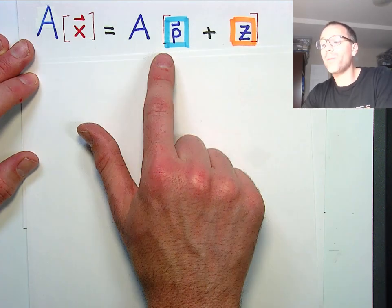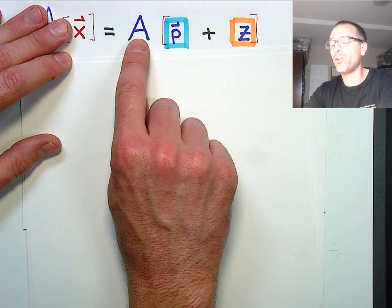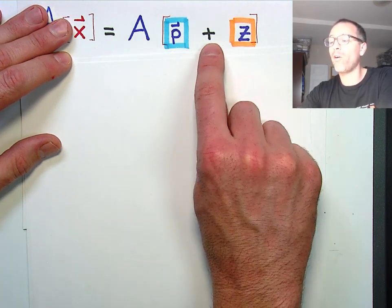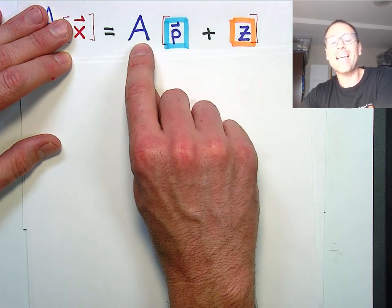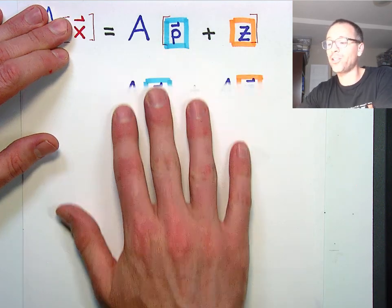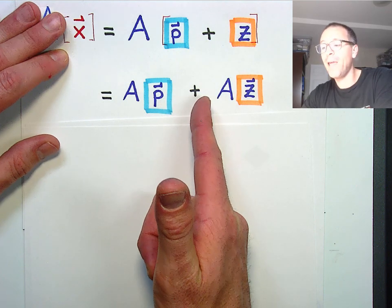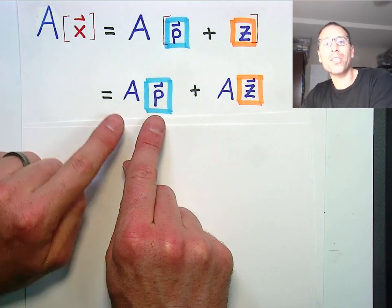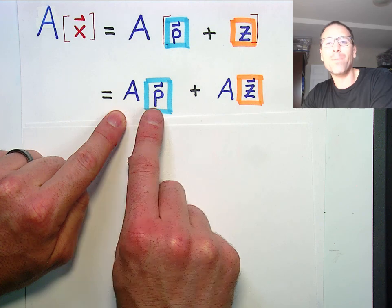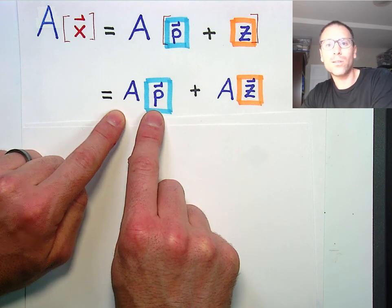The reason this works for determining a template for the general solution is remember that in matrix multiplication over a vector sum, we can actually pass that matrix to each individual vector. That's called left distributivity of matrix multiplication over vector addition. And then remember, what did it mean to be a particular solution? It meant A times p equals b.